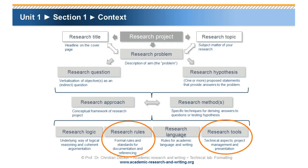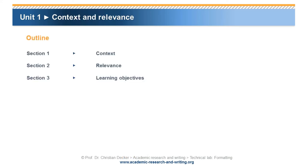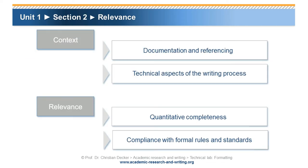This technical lab on formatting can be contextualized in the course Academic Research and Writing, in the scope of rules and tools of research. Research rules deal with formalized standards and rules for documentation and referencing. Research tools deal with technical aspects, which we will discuss in the Microsoft Word tutorial. This technical lab deals with quantitative completeness with respect to the presence of all required elements of a research paper, as well as compliance with formal rules and standards.